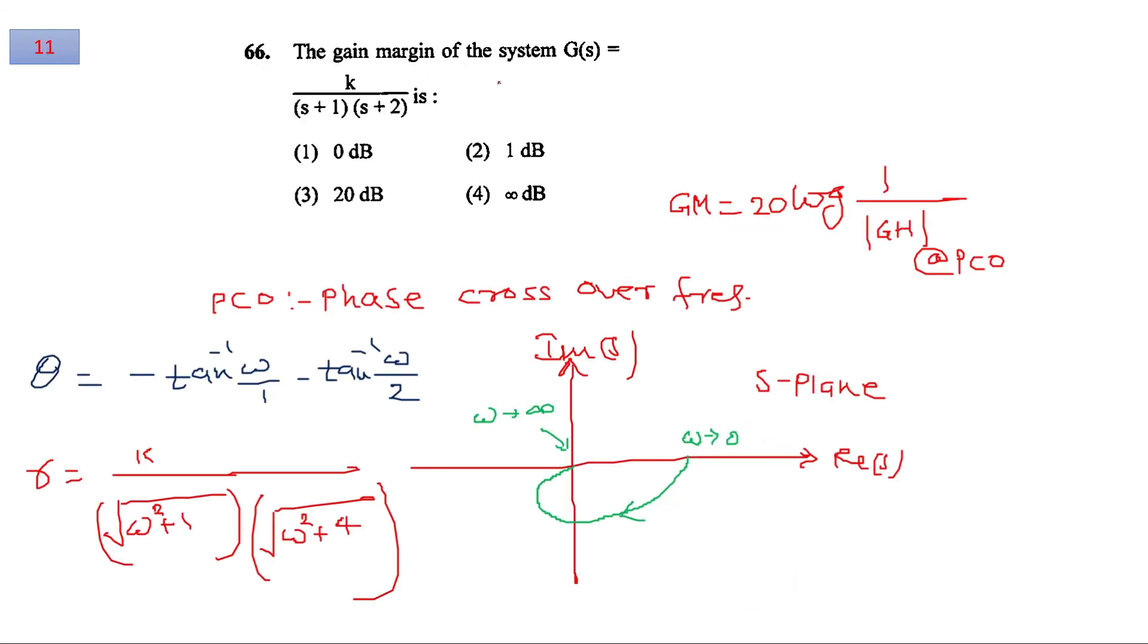Next, question number 11, the gain margin of system is to be obtained. By gain margin we mean that it can be obtained using this relation which is 20 log 1 mod of GH at phase crossover frequency. Phase crossover frequency is the frequency at which the angle of system becomes 180 degrees. These kinds of problems should be solved with the help of polar plot. If you draw the polar plot, you will observe that the graph does not cut the minus 180 degree axis. So for this given question, the gain margin of system will be infinite.